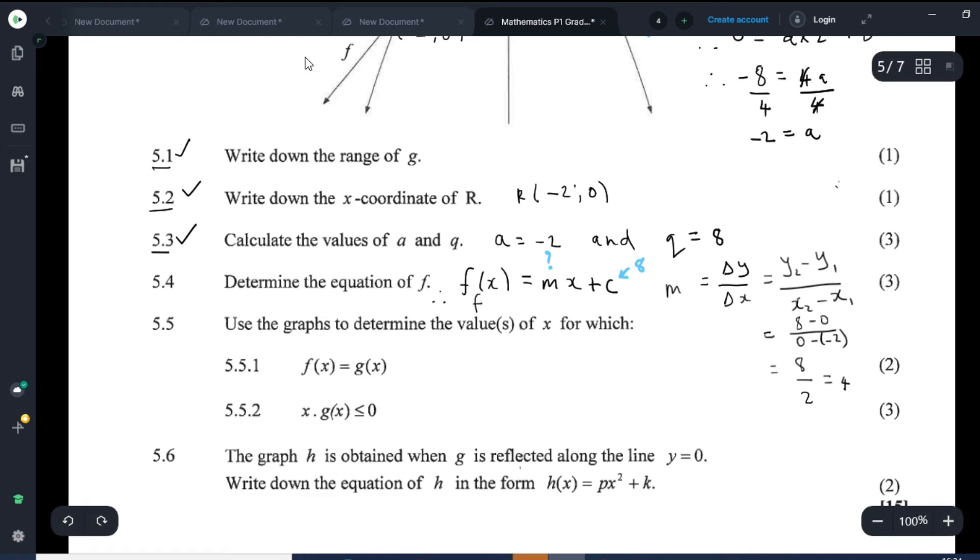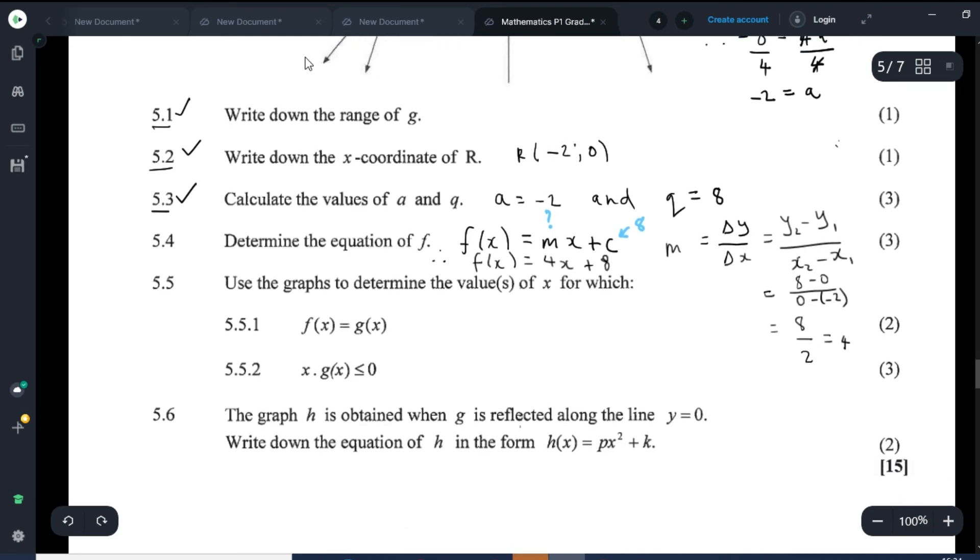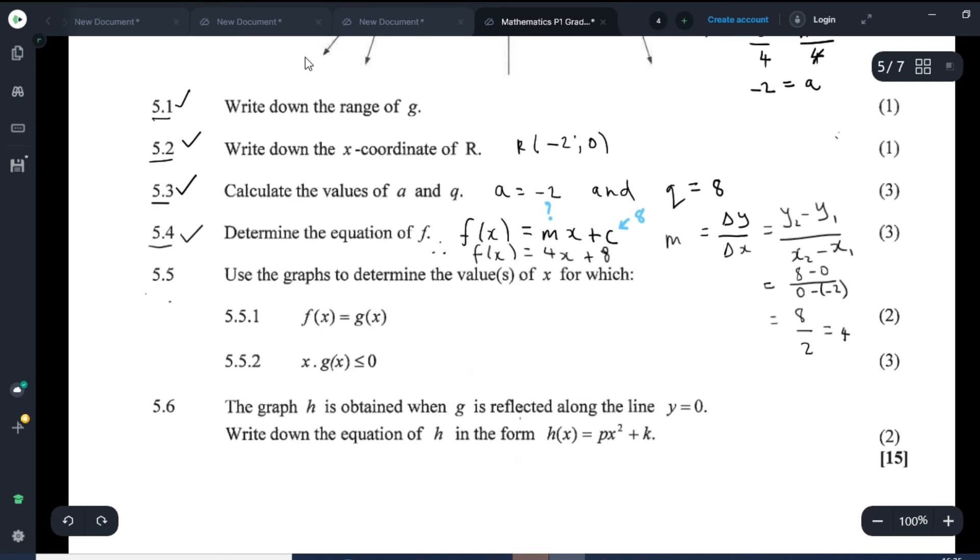So therefore, F of X equals 4x plus 8. And that seems to be right because the gradient is positive. If you look at the graph, the gradient is positive. So 5.4, very straightforward.